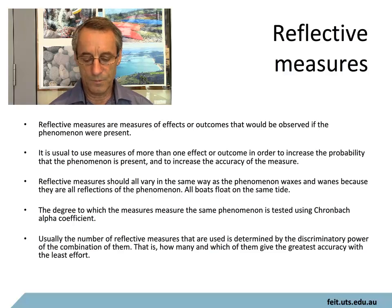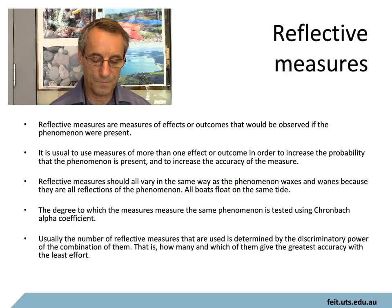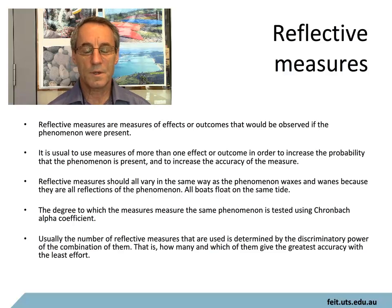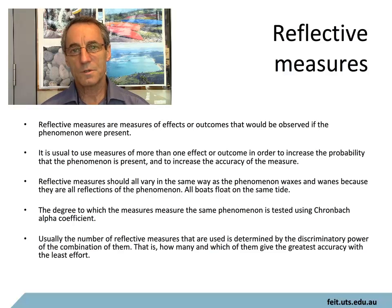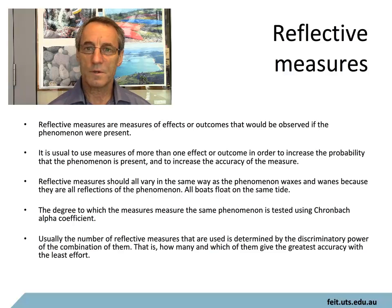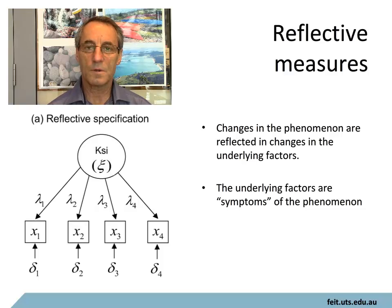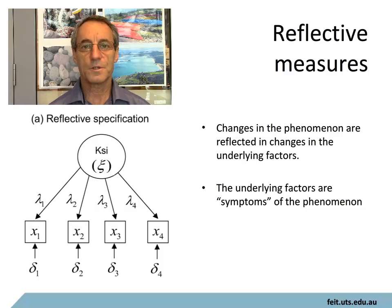The number of measures used is usually determined by the discriminatory power of the combination. With measurement, it costs a lot to gather data, so you don't want to gather more than you have to — the least number of reflective measures you need is good. The problem is determining which potential symptoms are the best indicators and how many you need. The diagram shows the phenomena of interest at the top and the symptoms at the bottom; if the causing phenomena changes, the reflections of it will also change. The underlying things are the symptoms, not the causes.